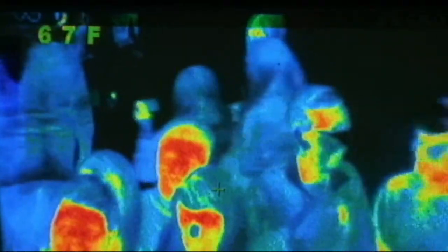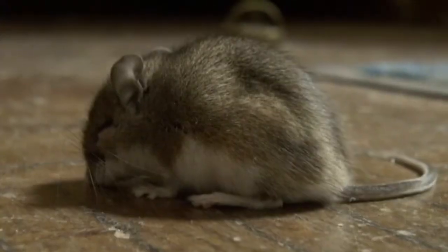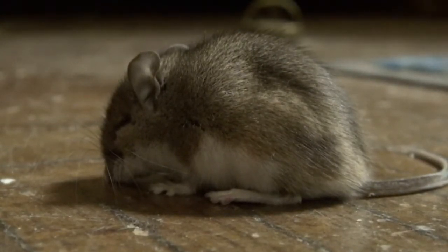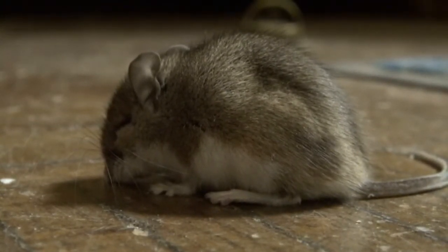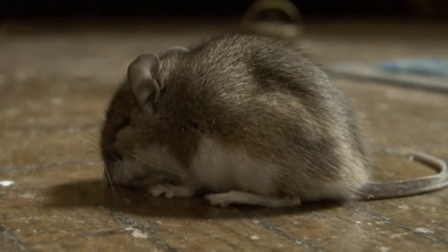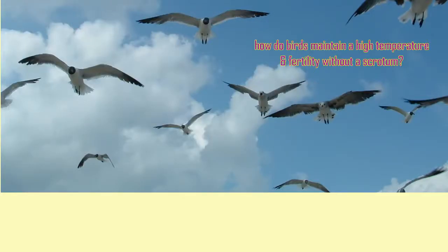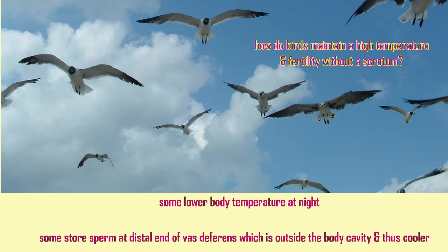As mammals evolved a higher body temperature, this threatened fertility, since the high body temperatures in the core of the body — where the testes were originally located — would cause infertility by killing sperm. Birds somehow maintain a high body temperature and fertility, but the testes do not descend into a scrotum. This is because some birds lower their body temperature at night, and some can store sperm at the distal end of the vas efferens, which is outside the body and thus cooler.